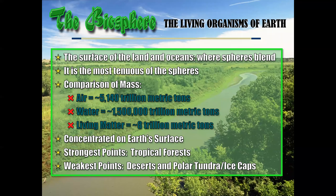The biosphere contains the living organisms of earth. You have to think of it as having strong points and weak points. Weak points, not surprisingly, are deserts and the polar regions, and strong points are tropical rainforests. The biosphere is the area where we live. The atmosphere is enveloping us. The hydrosphere provides moisture to the atmosphere and life-sustaining resources like fish. We are in that interface between the atmosphere and the hydrosphere, and in the biosphere is where all this stuff happens.